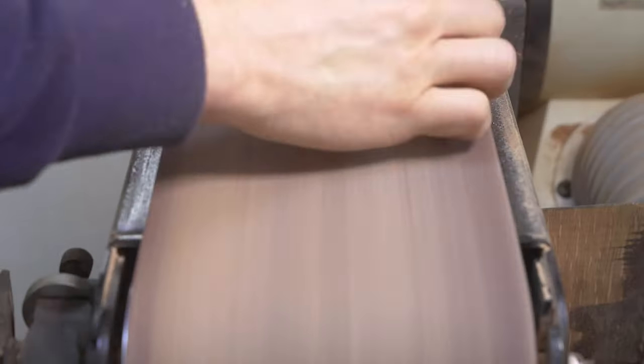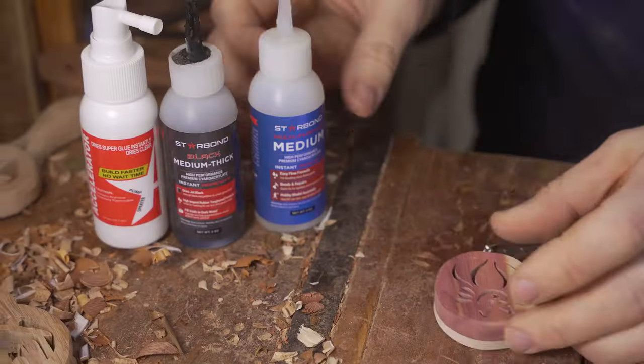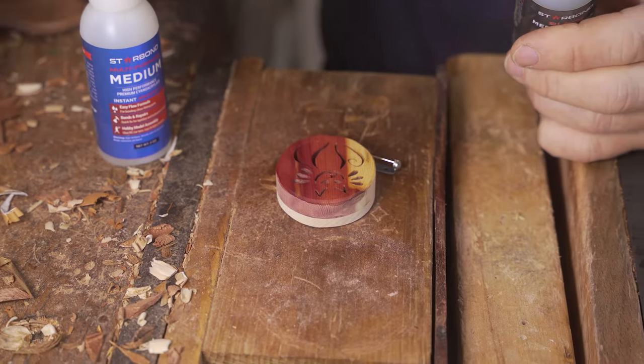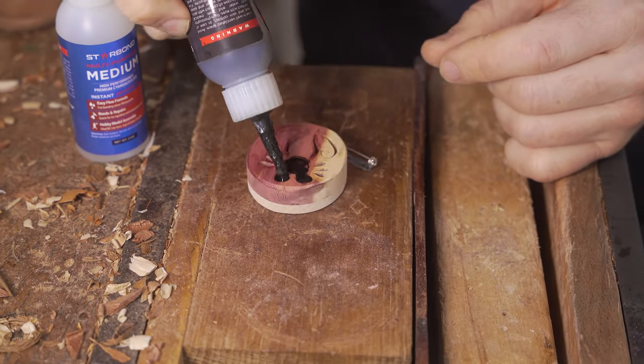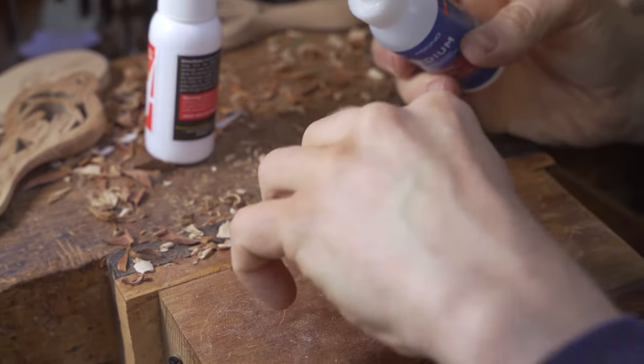As we mentioned, we can use our Starbond super glue to fill in all of the gaps. We put the brooch or pin badge clip on the back, once again using the Starbond and then sand off any excess glue on the belt sander.